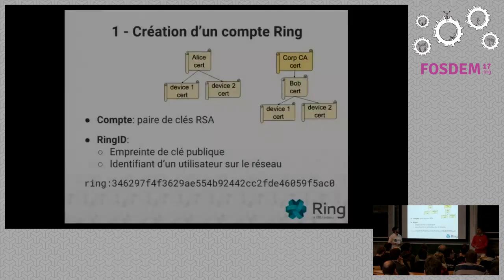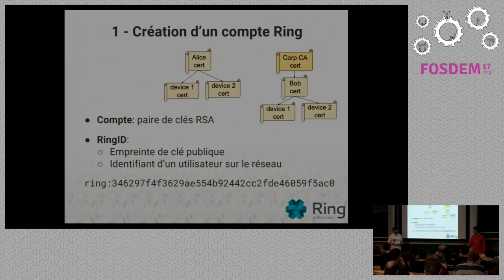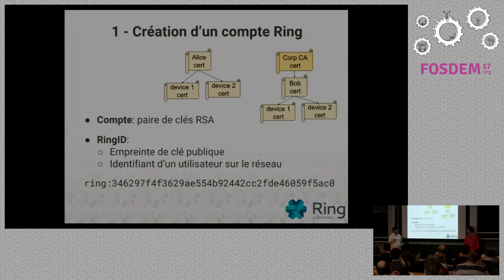Ring is based on a certificate chain. When you create a new Ring account, you generate a new RSA key pair. This is the base of identity management in Ring. Previously, older versions of Ring represented your username as the public key itself. A major advancement has been changing to a username that is bound to a public key, now stored using blockchain and distributed across the DHT.